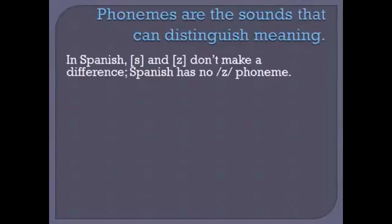A third example: Spanish has no Z sound. I know you'll immediately object if you've taken even the first day of a Spanish class — the Spanish alphabet does have a letter Z in it. But what I mean is that in Spanish, the S and the Z sound — the voiceless and the voiced alveolar fricatives — don't make a meaningful difference. Spanish has no voiced alveolar fricative as a phoneme.